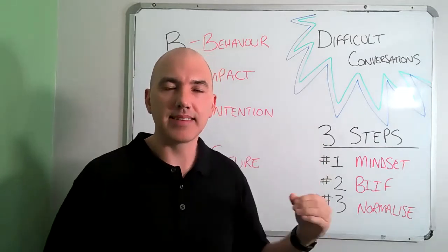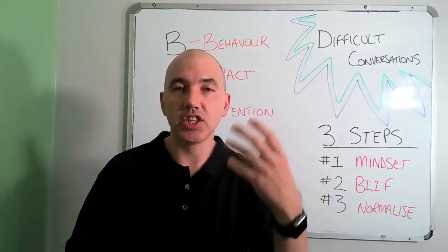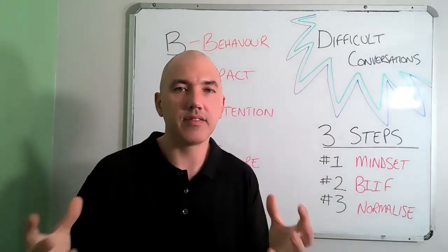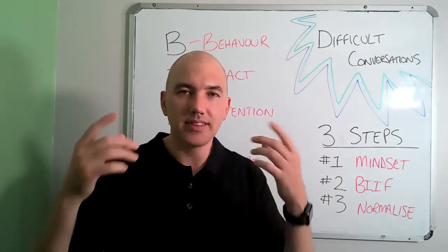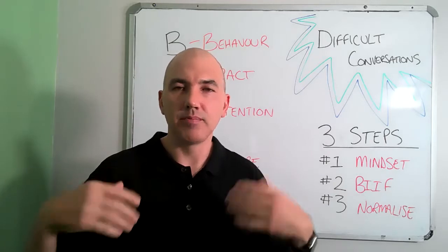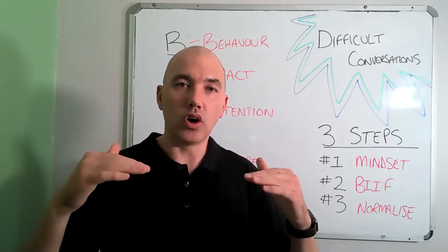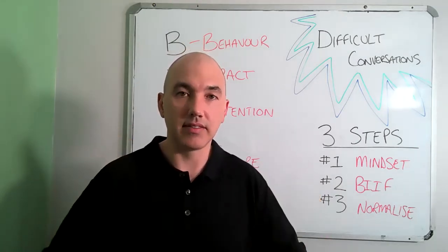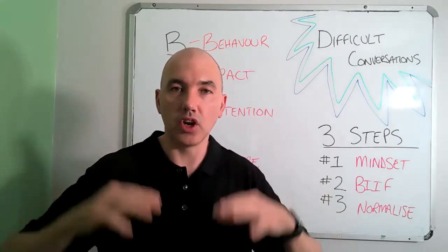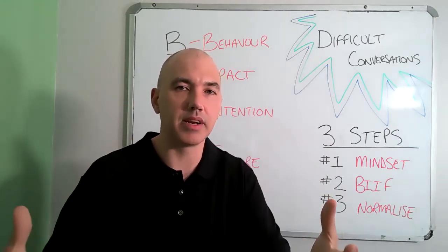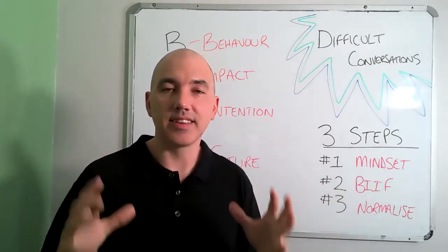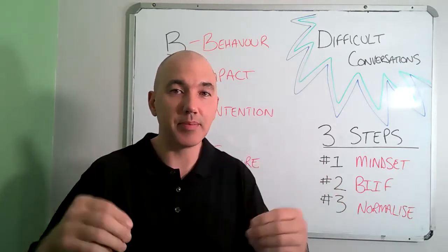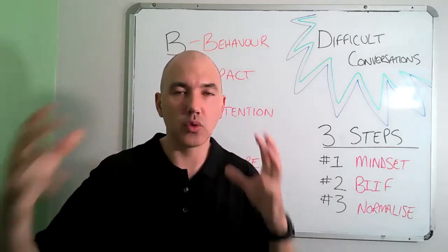So if we've got all the cortisol affecting the prefrontal cortex, we're not going to be problem solving, making the right decisions, or thinking clearly. When we look at mindset, we need to start changing the language. Rather than saying 'difficult,' say 'I've got a challenging conversation' or just 'I need to have a conversation.' We also need to incorporate some breathing — box breathing: four in, four hold, four out, four hold. That will calm you down, lower your anxiety, stress, and cortisol levels, so you can think clearer and deliver a better result. And the conversation doesn't need to be 20 minutes — it can be two minutes, because we're trying to nip everything in the bud.